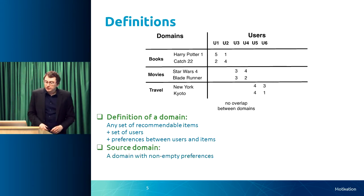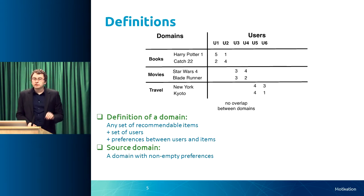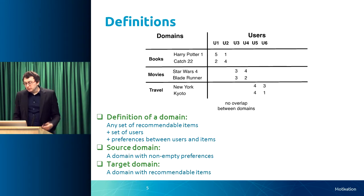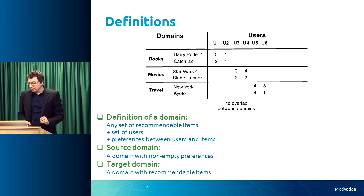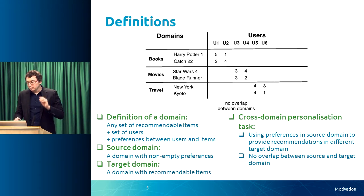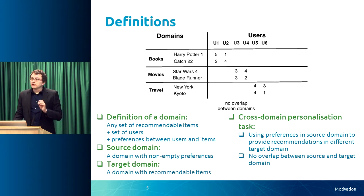Another concept I'll use frequently is the source domain — that's where we start the recommendation, and we need preferences there. If we're providing recommendations from book preferences to movies, then books is the source domain. Movies is the target domain — that's where we want to go, and we don't necessarily need preferences there. The cross-domain personalization task is to provide recommendations using preferences in the source domain for a different target domain, with no overlap between the two domains required — no shared users and no shared items.